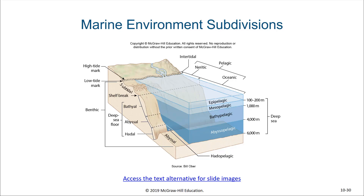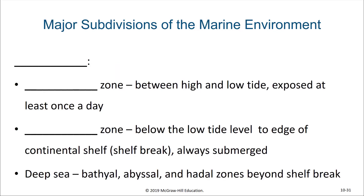In the mesopelagic zone, light is reduced and organisms can still detect light, but photosynthesis is far less efficient. In the bathypelagic and abyssopelagic zones, there is no light at all except that produced by the organisms living there — a variety of very strange and interesting sea creatures inhabit these zones. We will be talking about all of these environments in the next section of the course. In most of these environments we will see both benthic organisms and pelagic organisms.